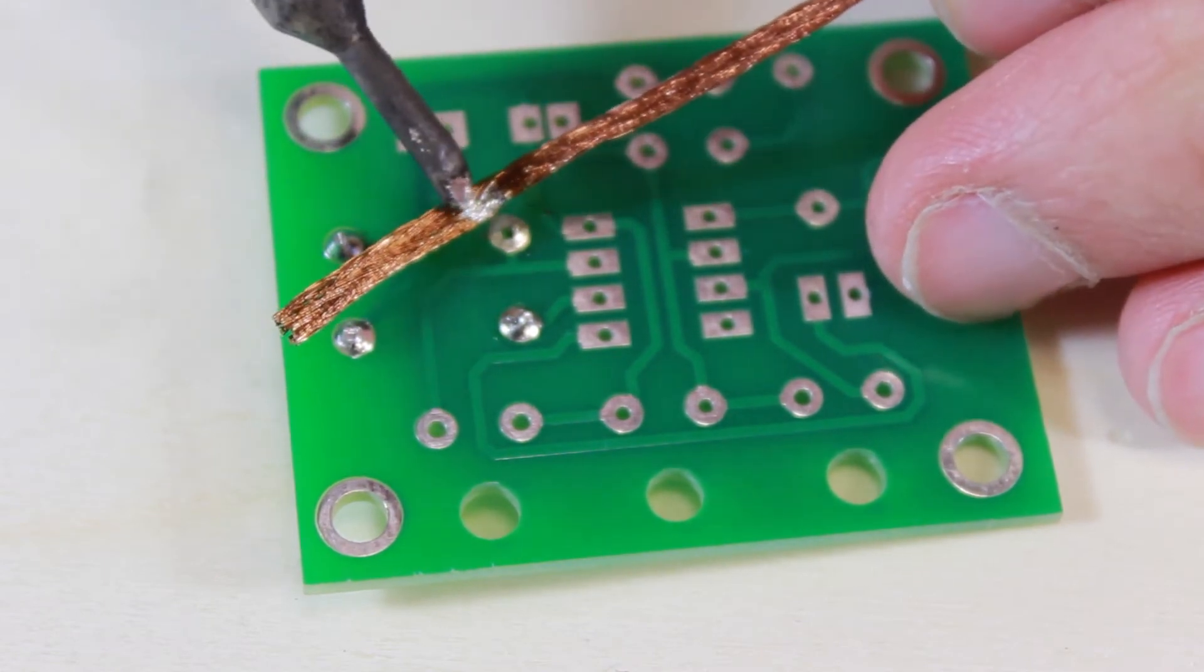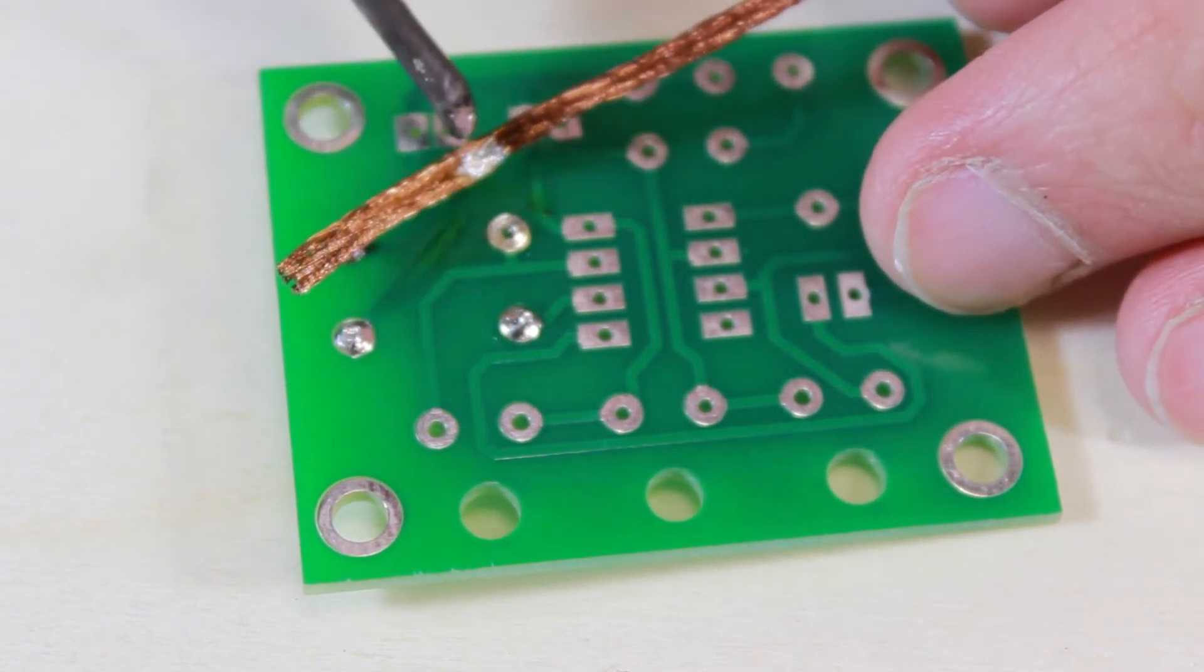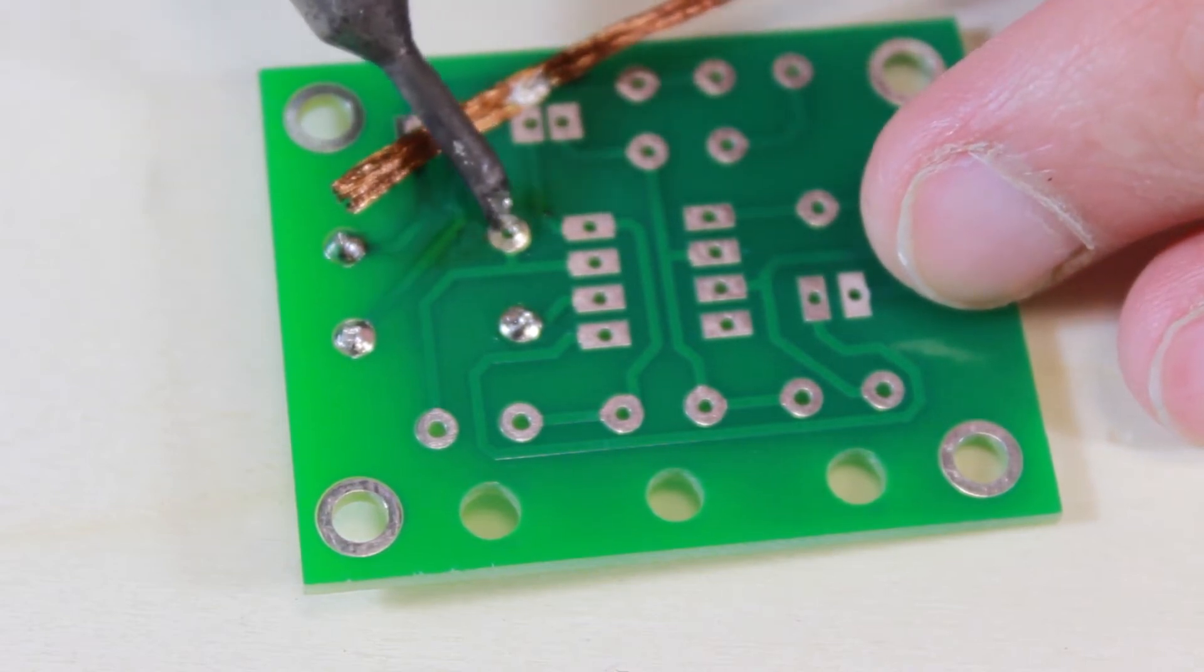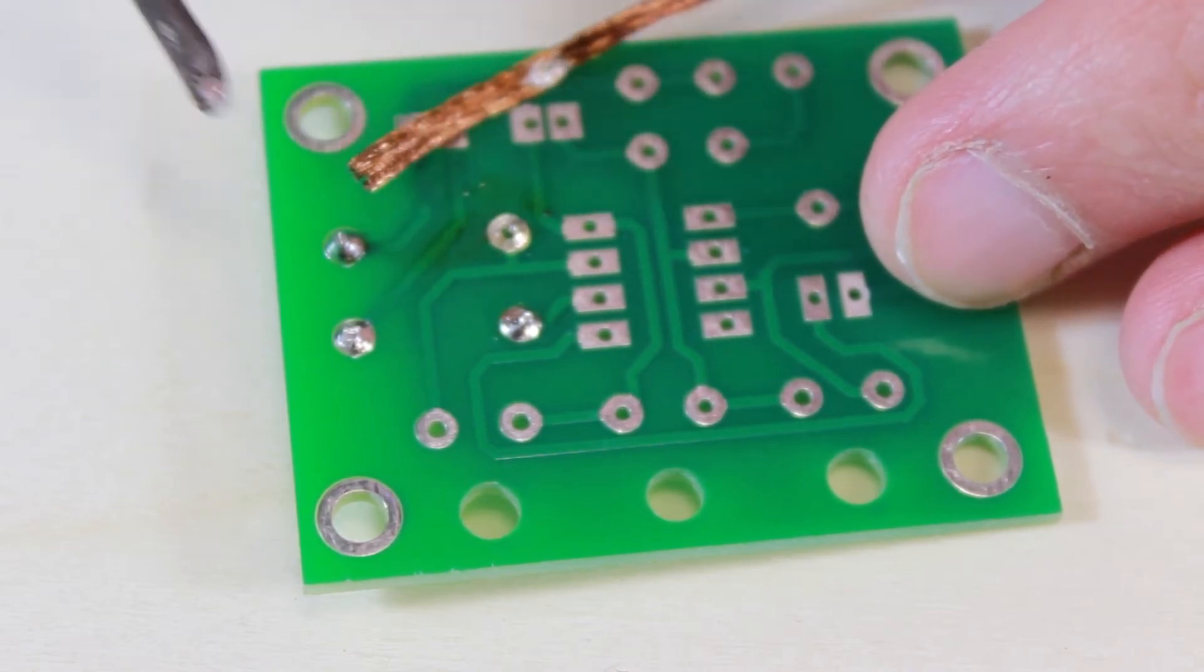We can see here the solder that's been wicked away from this joint, and into this solder wick, or braid. It leaves the component joint nice and clean, and you should be able to remove this part.